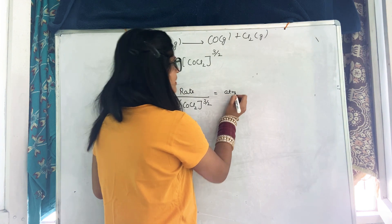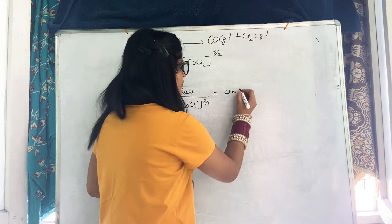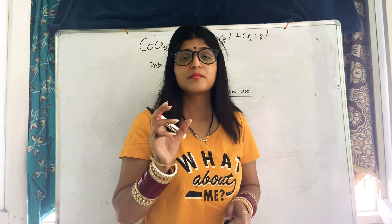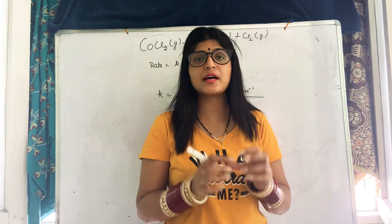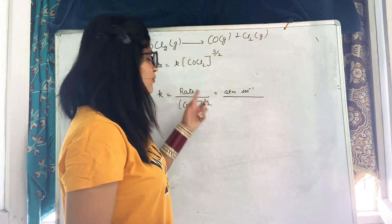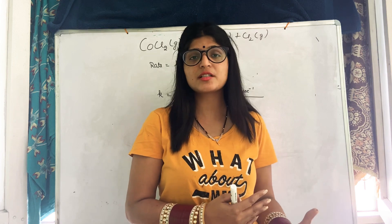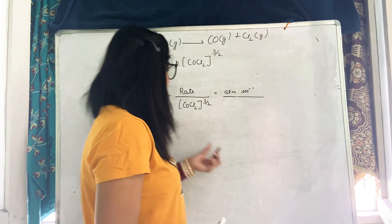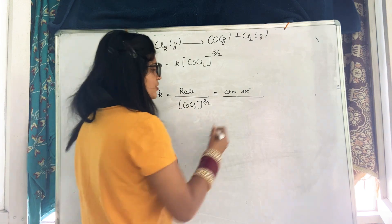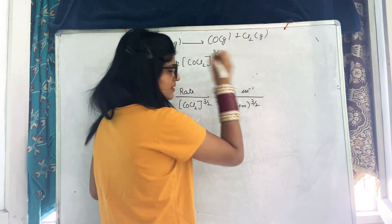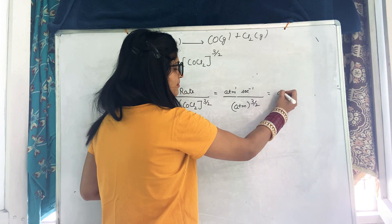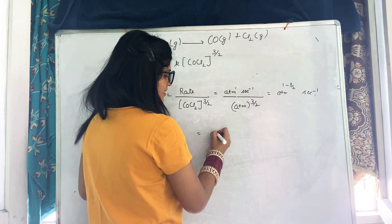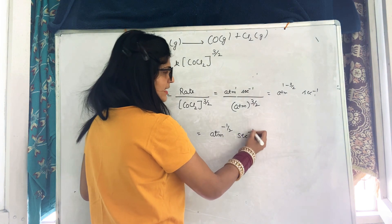Rate unit in the gaseous phase is atmospheric per second. k equals rate divided by [COCl₂] raised to 3/2. Substituting: k equals atmospheric per second divided by atmospheric raised to 3/2. This gives 1 minus 3/2 equals minus 1/2 power for atmospheric, so the unit of k is atmospheric raised to minus 1/2 per second, i.e., atm⁻¹/² s⁻¹.